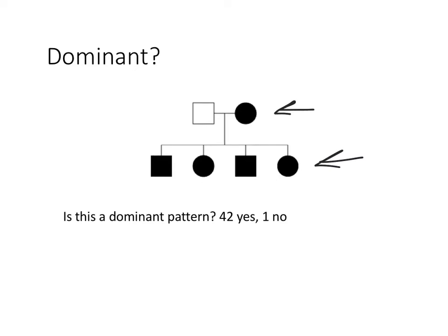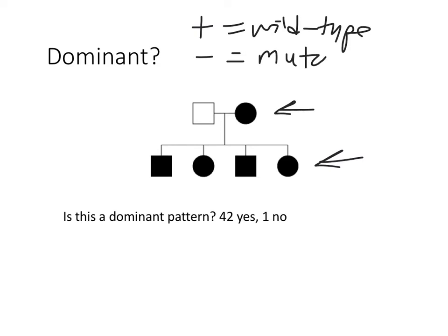Today we'll use plus to indicate a wild-type allele and minus for the mutant allele, be it dominant or recessive. So what would be the genotype of the affected individual if this is dominant? They'll either be plus/plus or plus/minus. Plus/plus is the wild-type phenotype, so plus/plus would be unaffected.